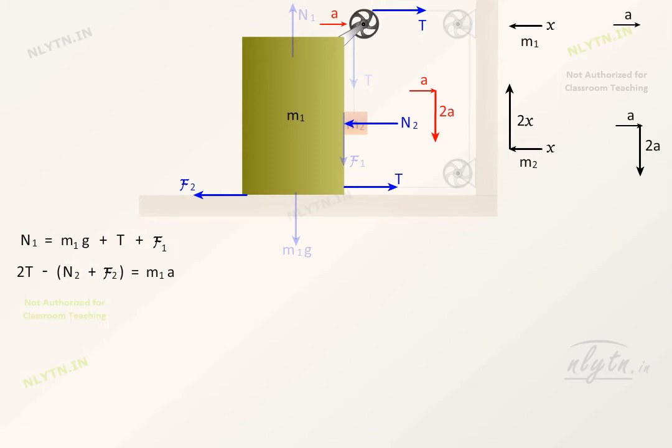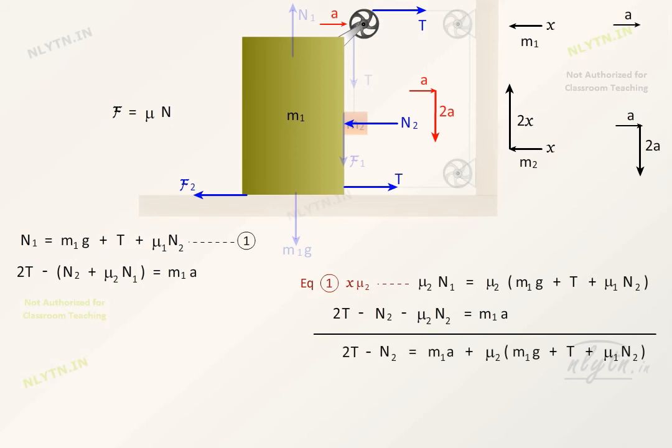Since we have assumed that our system is moving, we can write friction to be equal to μ into N. Eliminating N1 from these equations, we get 2T minus N2 is equal to m1 into a plus μ2(m1g plus T plus μ1 into N2).